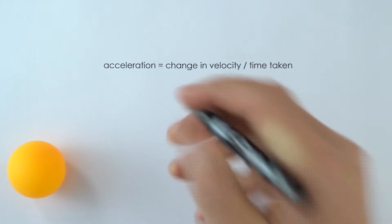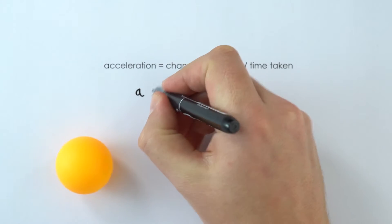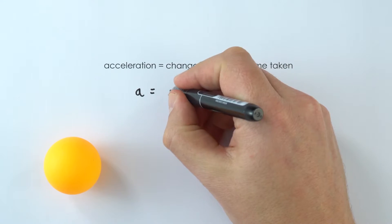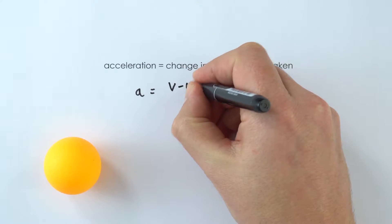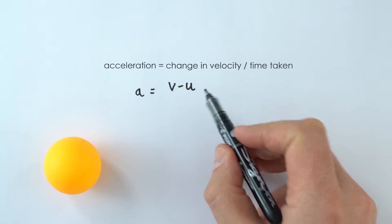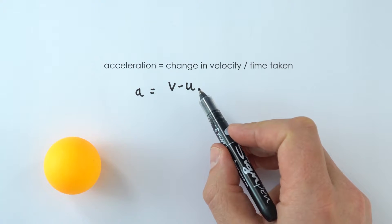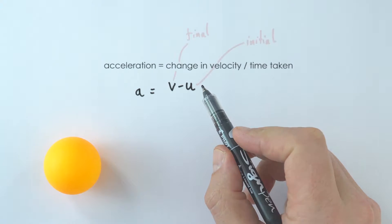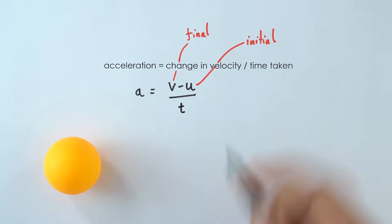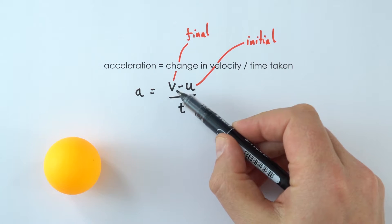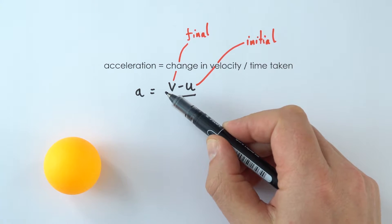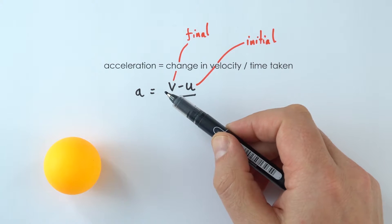We use the letter A for acceleration, and we represent the change in velocity as V minus U. So V is our final velocity, and U is the initial, or starting, velocity. We represent time just as T. So this is basically how fast it was initially, and then how much faster it became — we're looking at the difference between these two numbers.